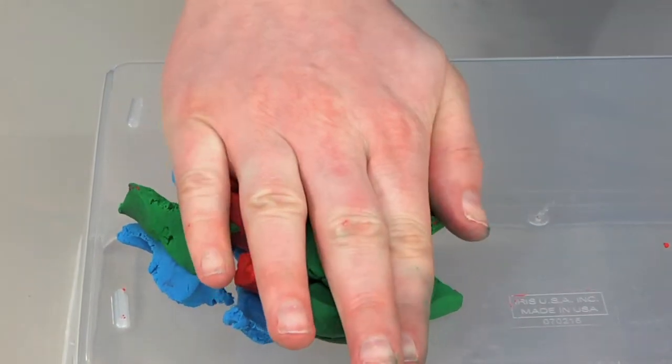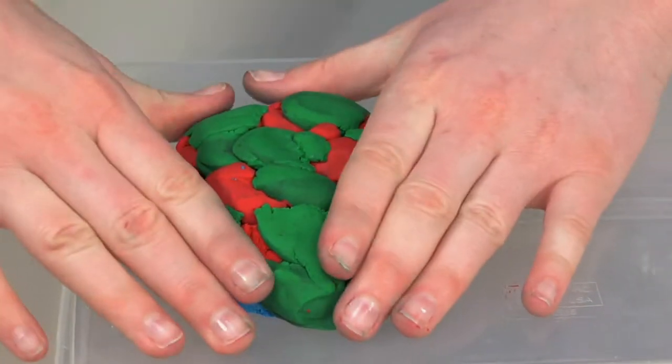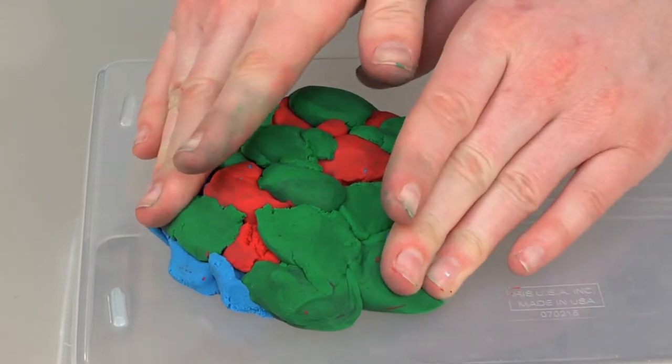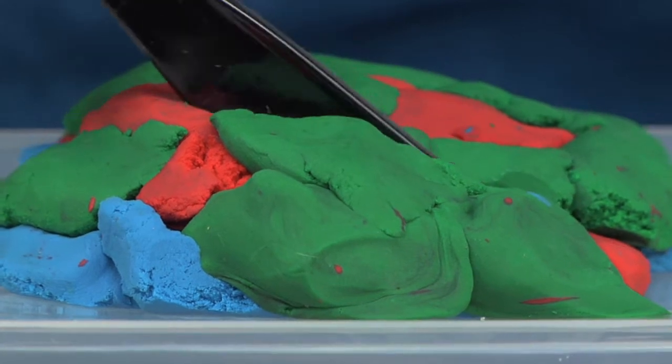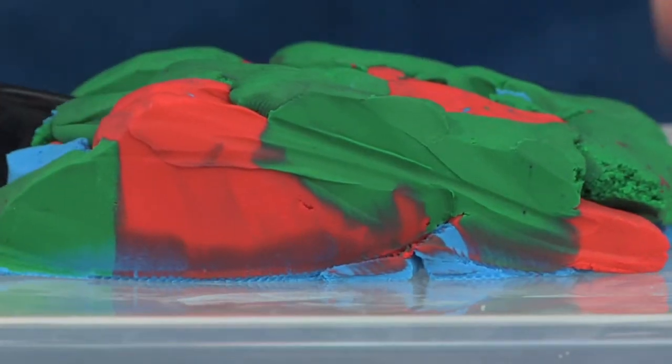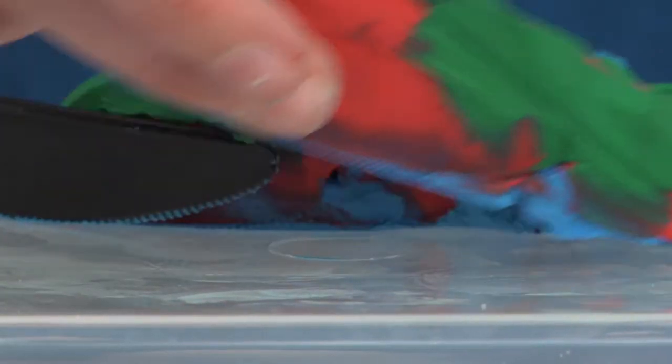Now press the model together to simulate the heat and pressure that causes compaction and cementation of sedimentary layers. Use a plastic knife to cut the clay into three individual rock pieces and observe the banded pattern of each cross section.